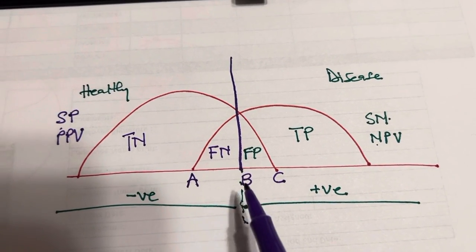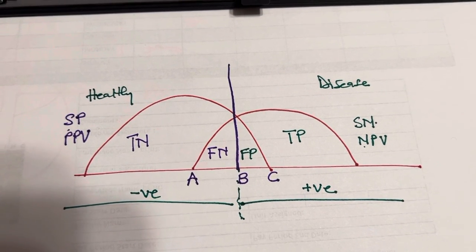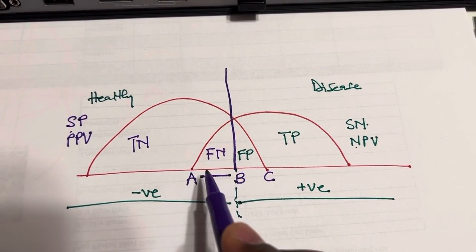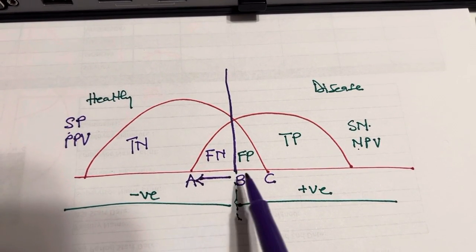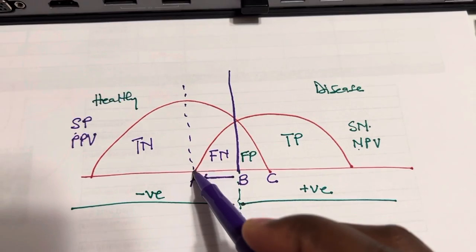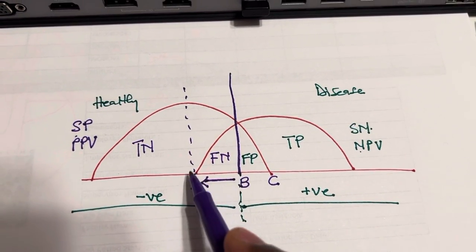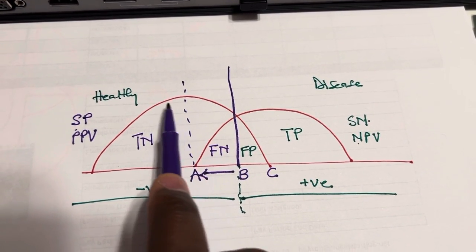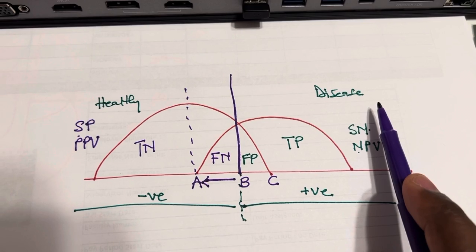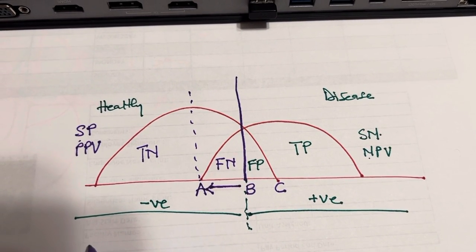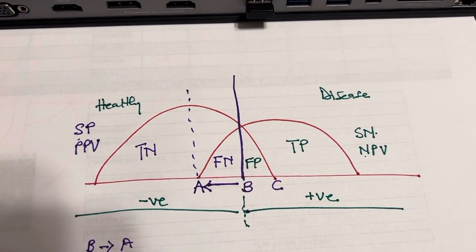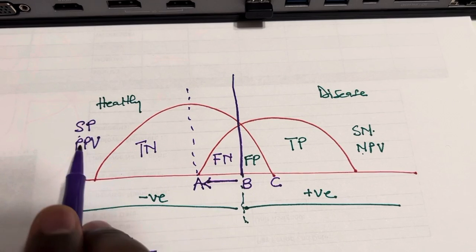Now let's see what happens when we shift the cutoff from B to A. If I shift the cutoff from B to A, it means this cutoff line will move to the left. Everything toward the left side — the healthy/specificity side — will shrink. Everything toward the right side will increase. So if we move the curve from B to A, specificity will shrink and decrease.